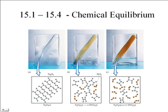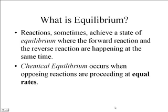If we go back to that very first slide, what it looks like to us is nothing's really happening. We start with N2O4, it slowly becomes NO2. But the NO2 molecules will hit each other and go back to being N2O4. So to our eyes, when we look at a reaction in equilibrium, it appears as if nothing's changing. But the forward reaction is still occurring, the reverse reaction is still occurring — it just looks to us like nothing is happening.